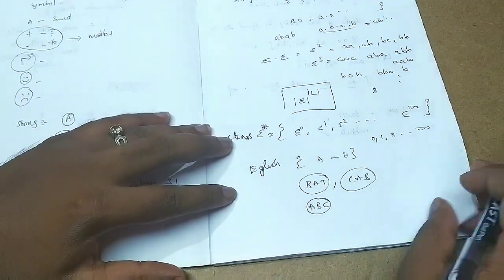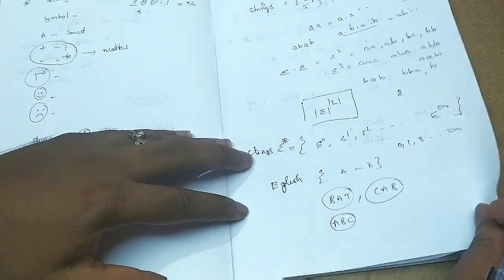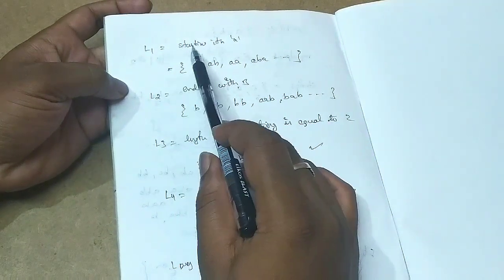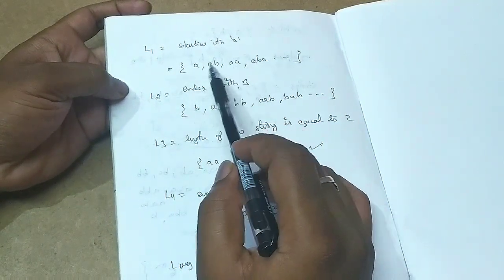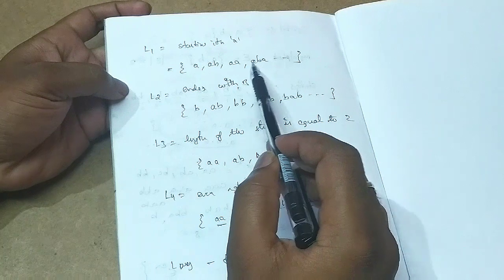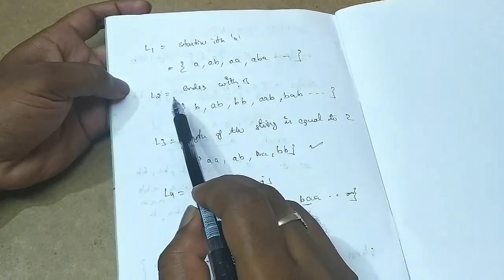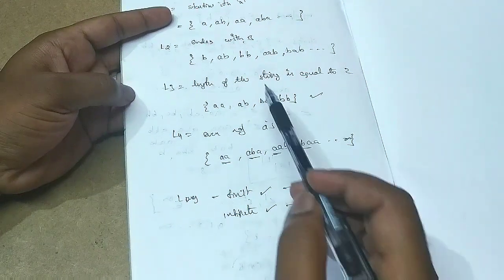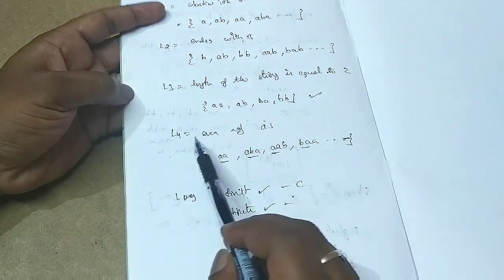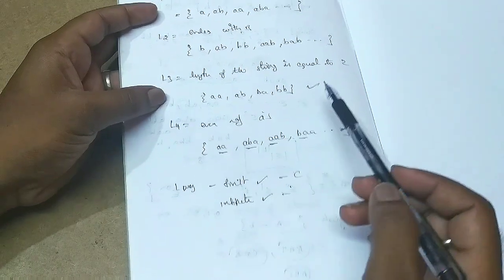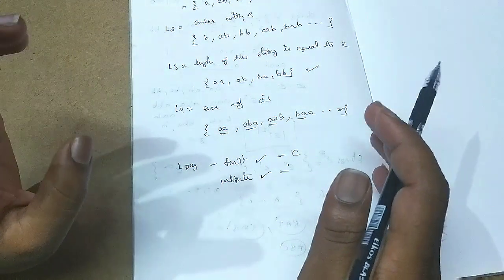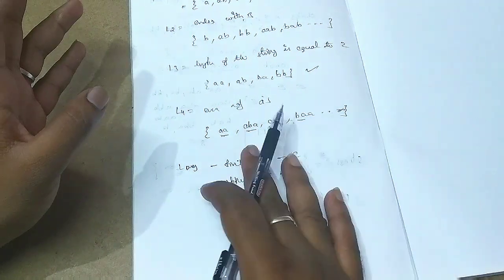Just remember it as sigma star. I have discussed that to construct a language there should be a common rule between the strings. In L1 the common rule is all strings start with A; L2 is ending with B; L3 is the length of the string should be 2; L4 is even number of A's. We have two kinds of languages: finite and infinite.